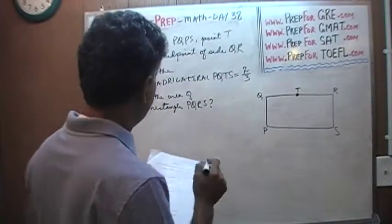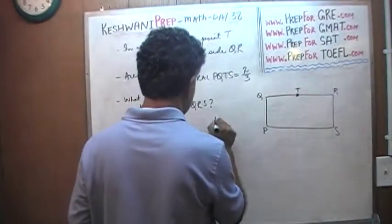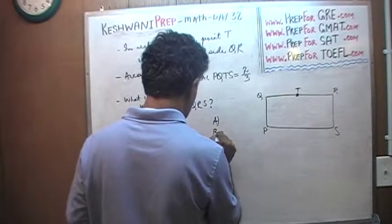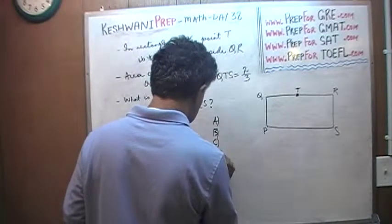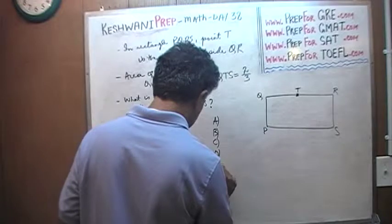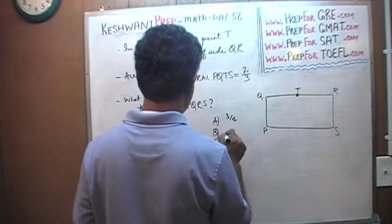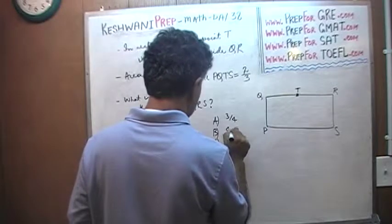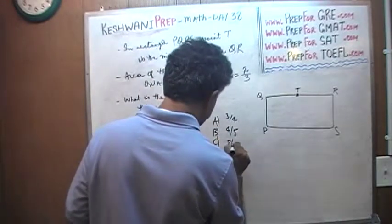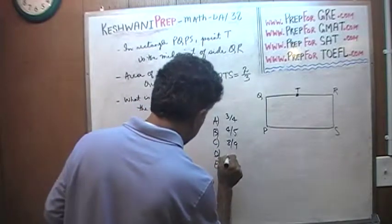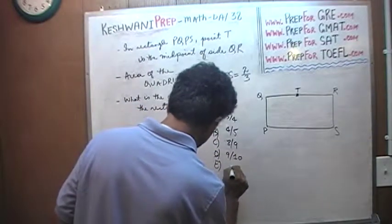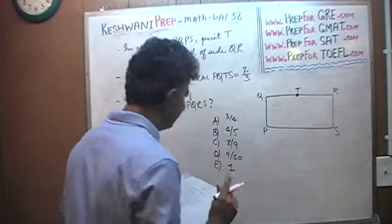And here are the answer choices. Three-quarters, four-fifths, eight-ninths, nine-tenths, or one.